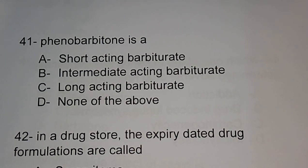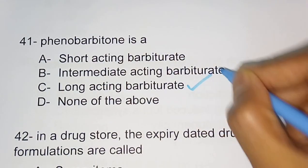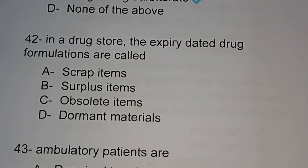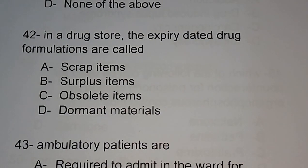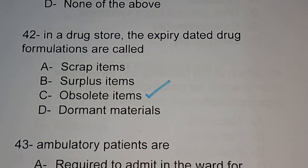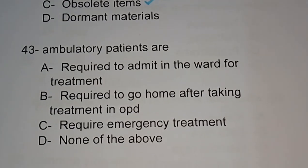Question number 41: a long-acting barbiturate is — options are short-acting barbiturate, intermediate barbiturate, long-acting barbiturate, none of the above. The correct answer is option C; phenobarbitone is a long-acting barbiturate. Question number 42: in a drug store, expiry-dated drug formulations are called — scrap items, surplus items, obsolete items, or dormant materials. Obsolete items, option C, is the correct answer.